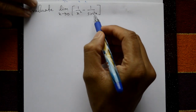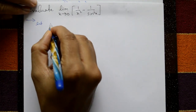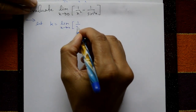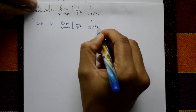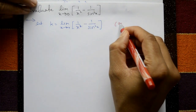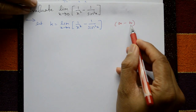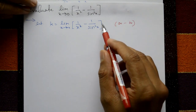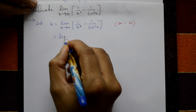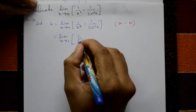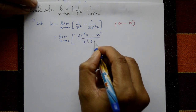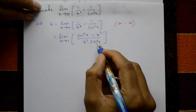Now evaluate limit x tends to 0 of 1/x² minus 1/sin²x. Let k equal limit x tends to 0 of 1/x² minus 1/sin²x. Substituting x = 0 gives infinity minus infinity. Convert by taking LCM: limit x tends to 0 of (sin²x minus x²) divided by (x² times sin²x).